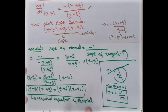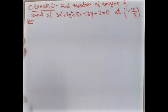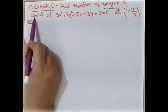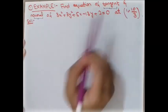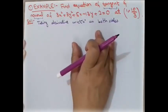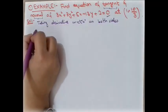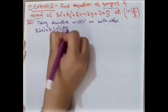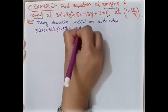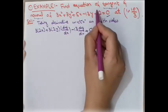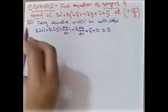Now for the example: given the equation of a circle, we must find the equation of the tangent and normal at the point (1, 10/3). First, we find the slope by differentiating the given equation with respect to x. Differentiating gives: 3·2x + 3·2y·(dy/dx) − 13·(dy/dx) + 5 = 0, and the derivative of any constant is zero.